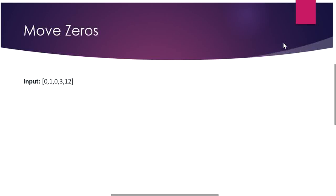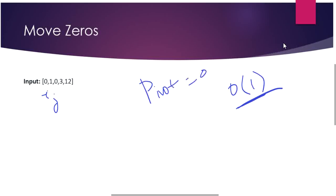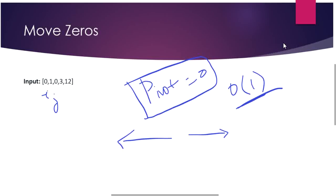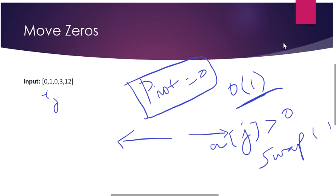For a brute force approach we would need an extra array to push all positive numbers first and then the trailing zeros, but the challenge is to solve this in constant space. Again our partition algorithm comes to help. We use pointers i and j, and set our pivot element as 0. This pushes all elements greater than the pivot towards the left and all elements equal to 0 towards the right, according to our partition logic.